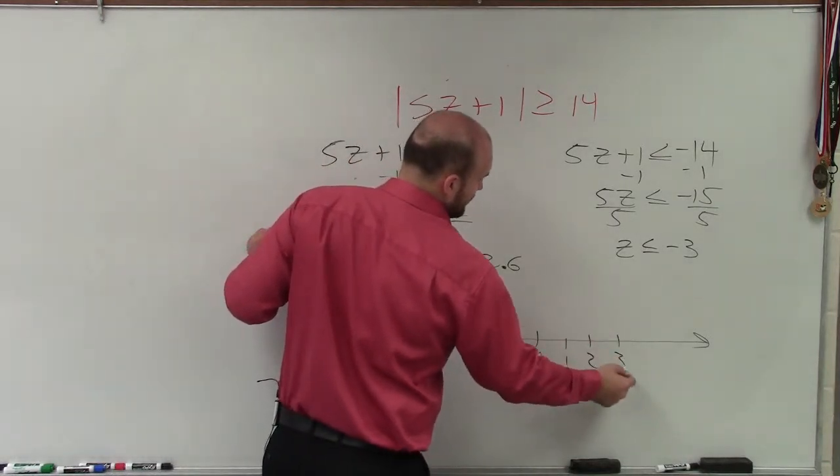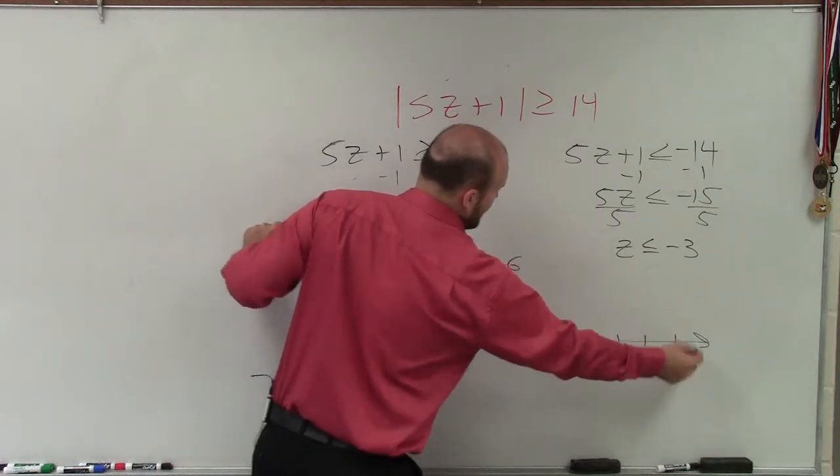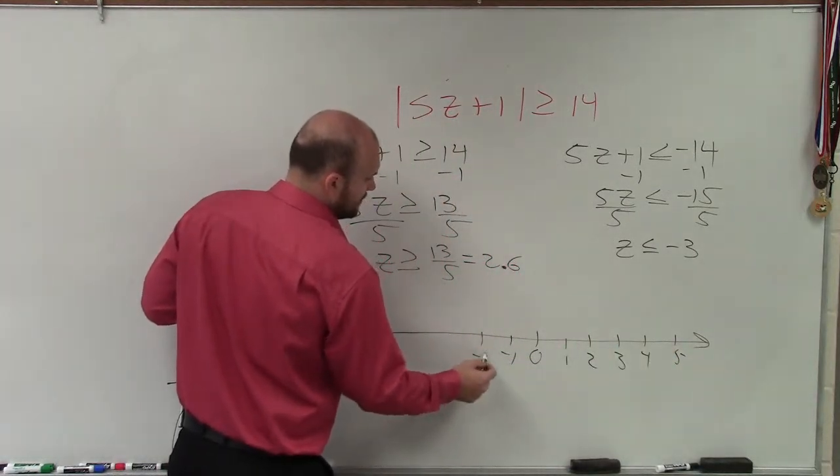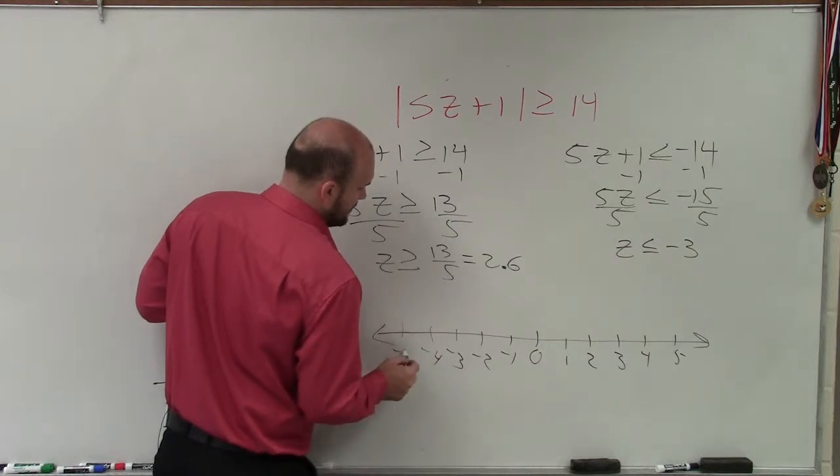So let's have 0 here, 1, 2, 3, 4, 5, negative 1, negative 2, negative 3, negative 4, negative 5.